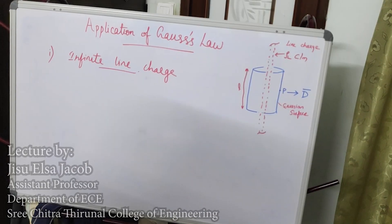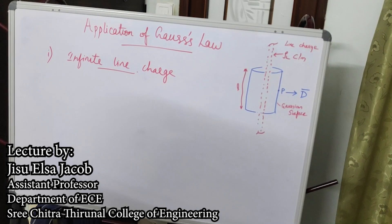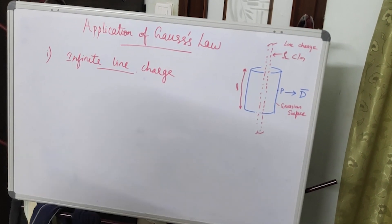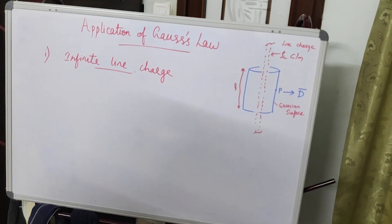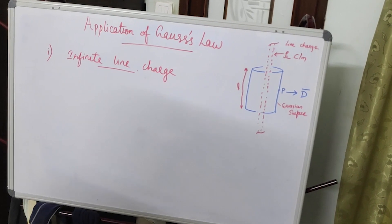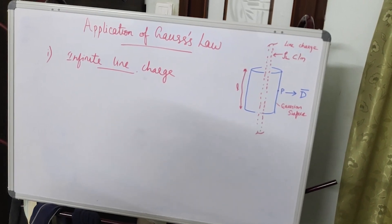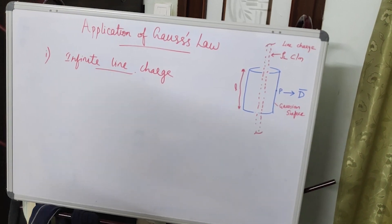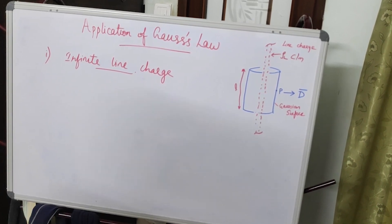In this figure you can see an infinite line charge, marked in red. A line charge is represented by the charge density along unit length — that is, charge along unit length is the charge density ρ_L, and its unit is coulombs per meter. We are assuming that there is an infinite line of uniform charge along the Z-axis. To find the flux density vector D at a point P and to apply Gauss's law, we first identify the Gaussian surface, which is a cylinder equidistant from the line charge, marked as the blue cylinder.